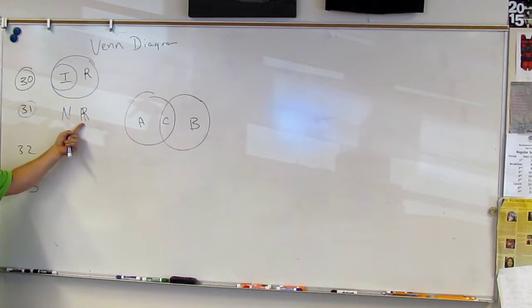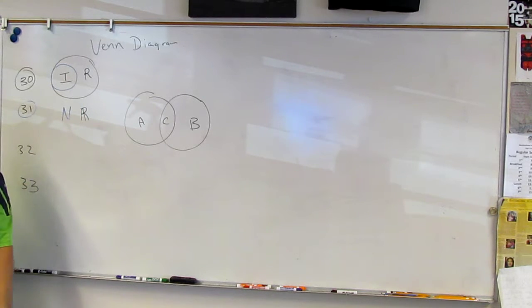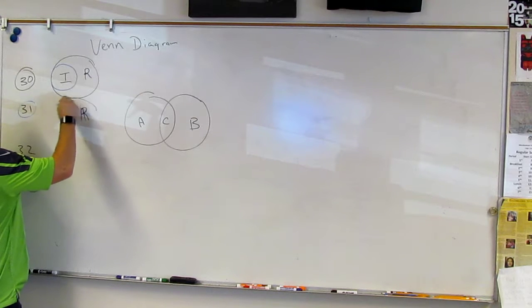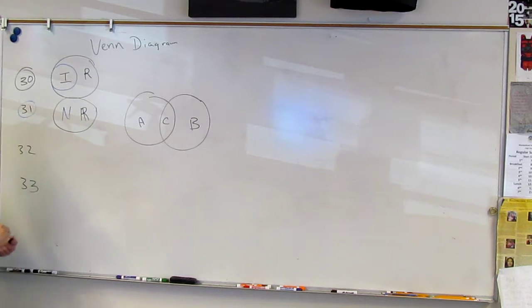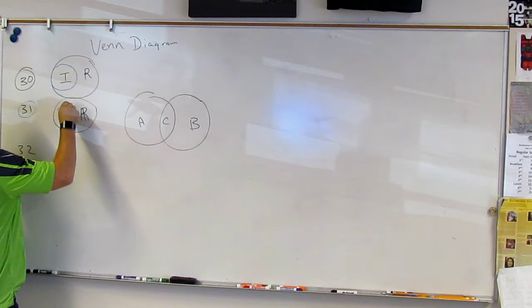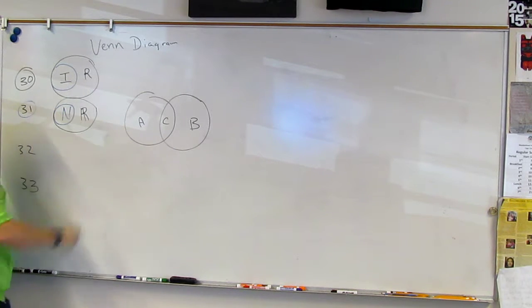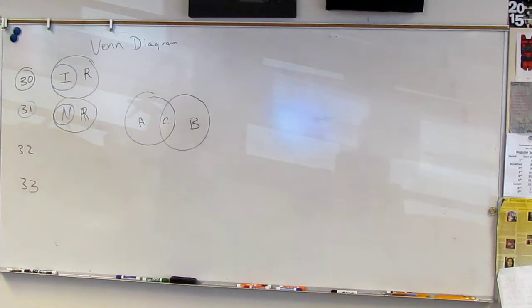So it's an R with another line in it. And so real numbers is huge. But natural numbers is small. All of these are in there. So it's a circle inside the circle.